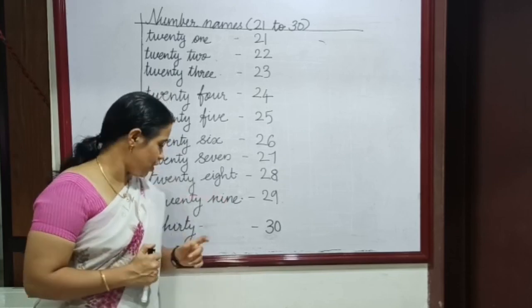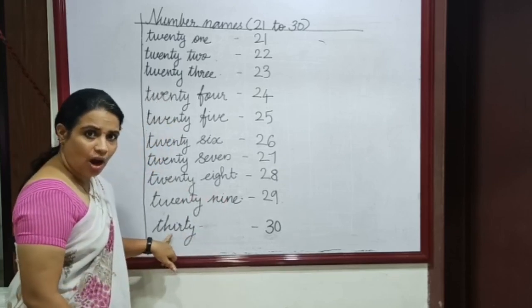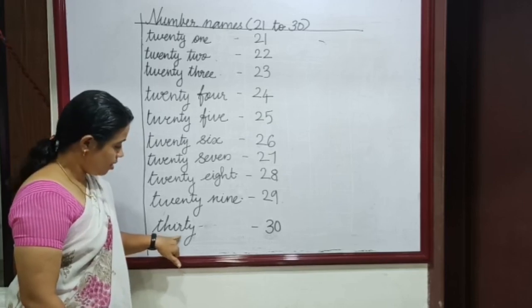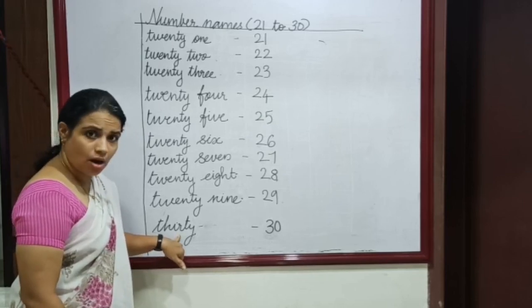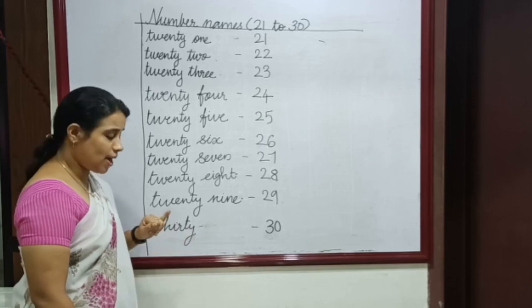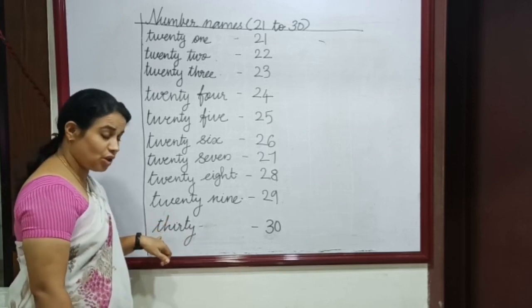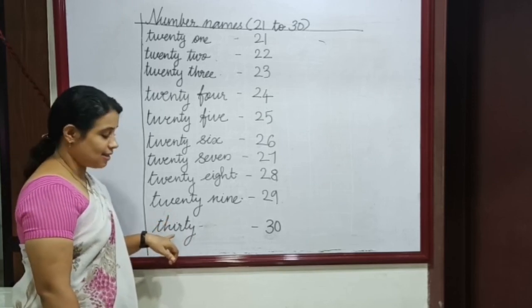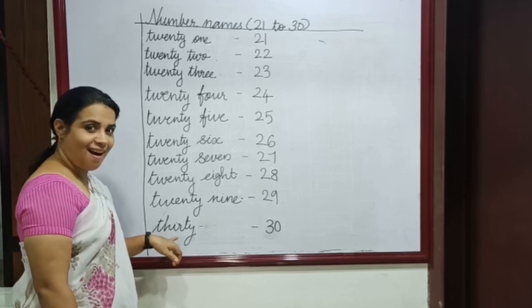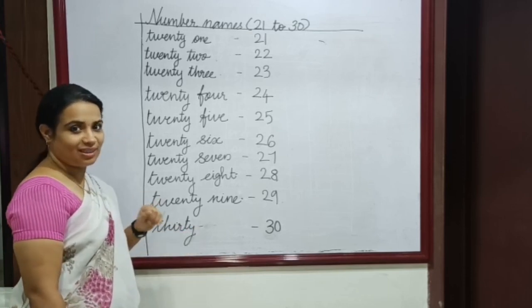T, H, I, R, T, Y — 30. Then: T, H, I, R, T, Y — 30.